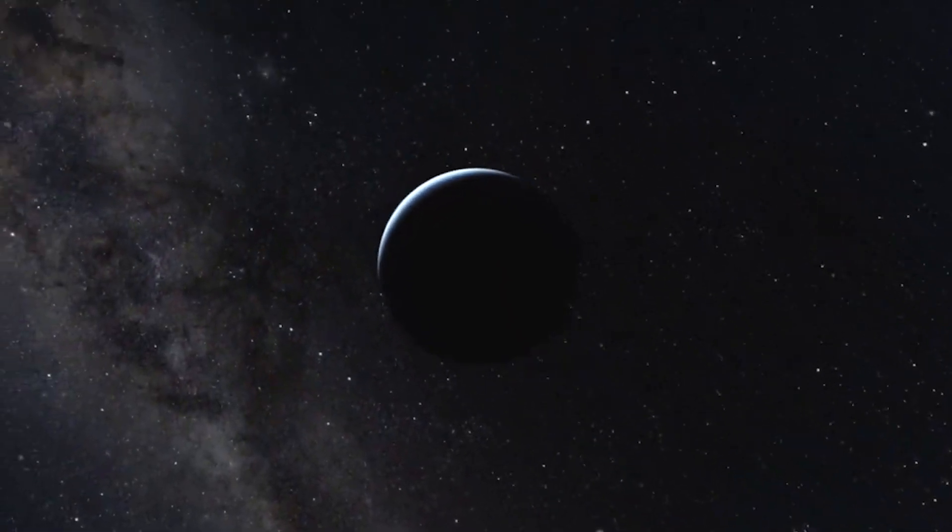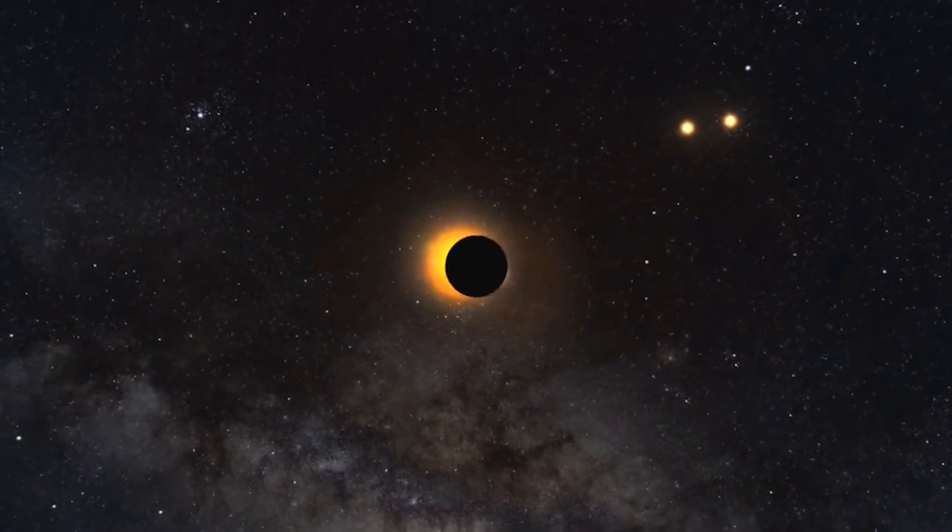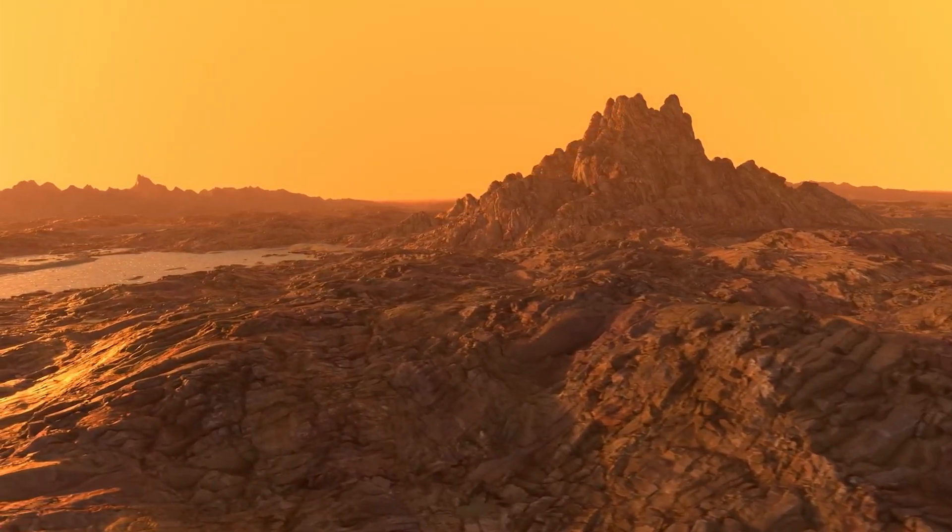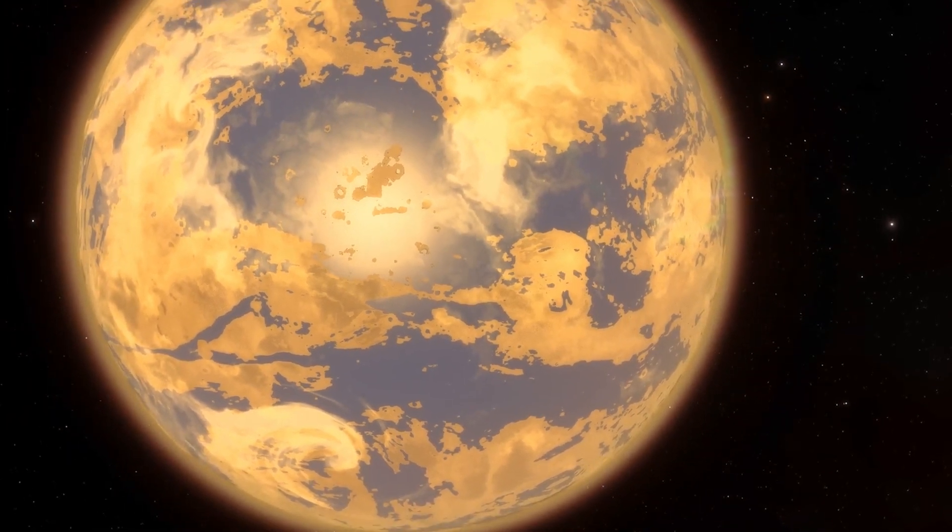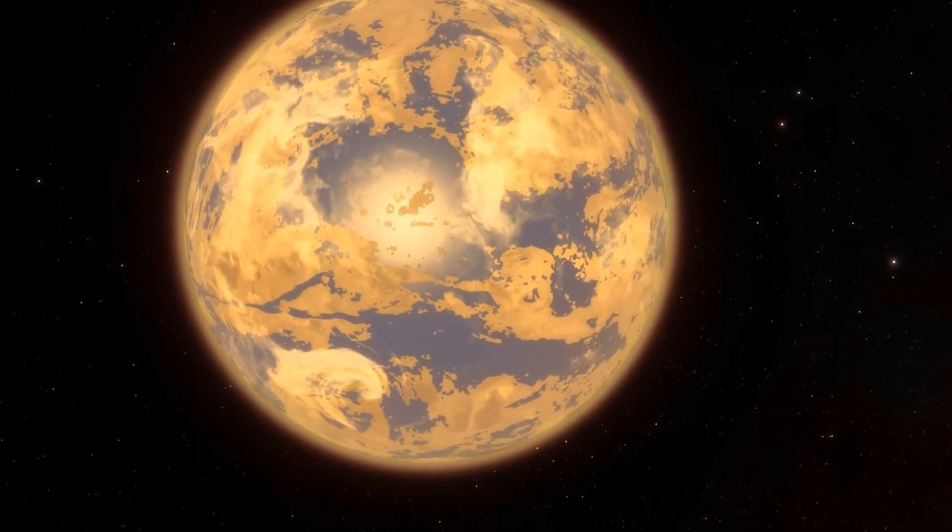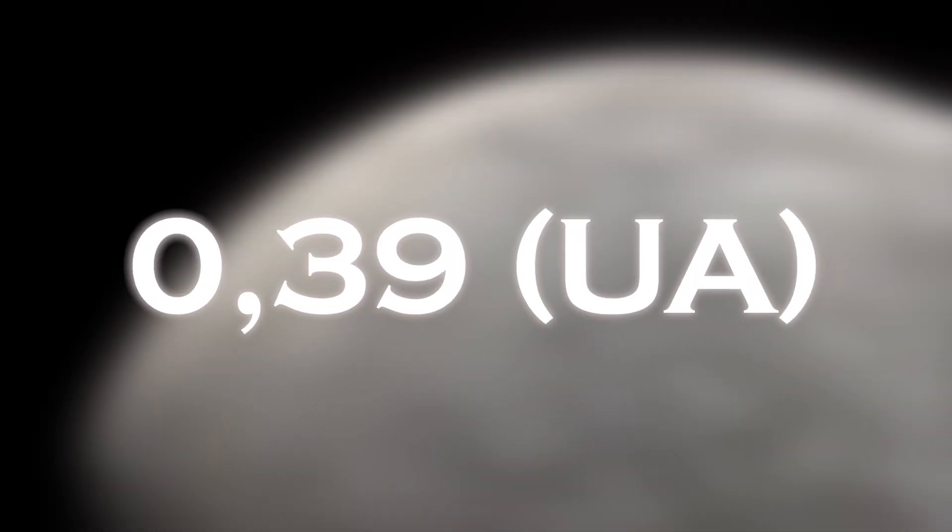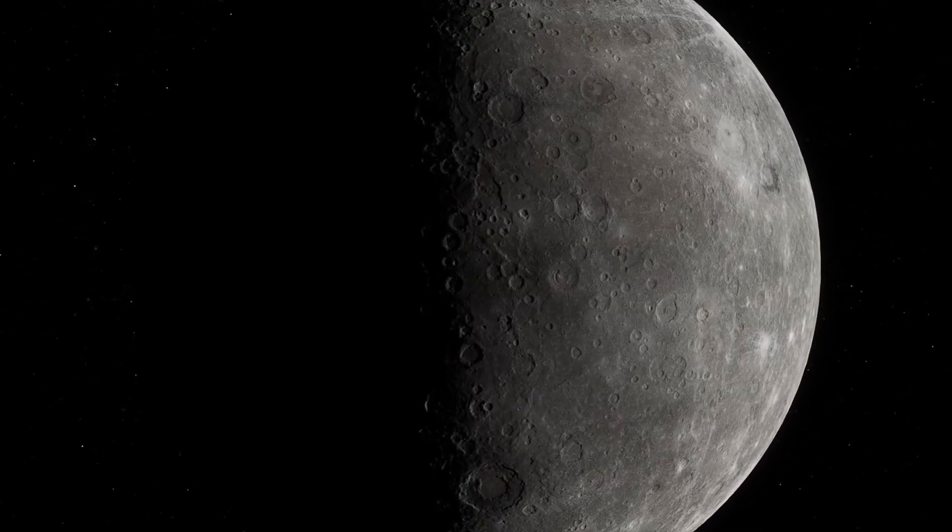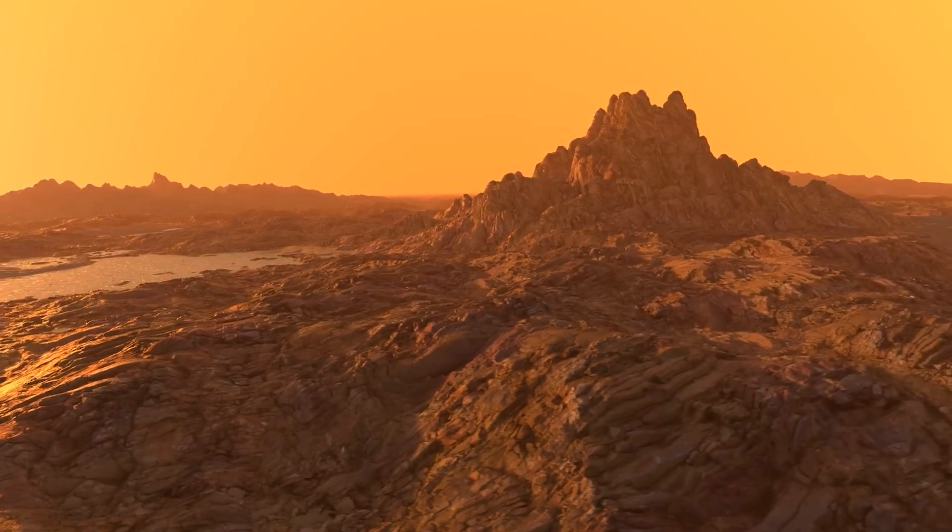On closer examination, Proxima b turns out to be very similar to Earth, with a radius 1.1 times that of Earth and a mass 1.3 times that of Earth, indicating that it is a rocky world with an equivalent density. However, there are significant differences. The first is the location of the two planets in their respective solar systems. Proxima b is much closer to its parent star, at only 0.05 AU, while Mercury is at a distance of 0.39 AU from the Sun. This proximity would make Proxima b an extremely hot planet, but because Proxima Centauri is a dim red dwarf, the planet receives only 60% of the energy that the Earth receives from the Sun, placing it in the habitable zone where life could exist.